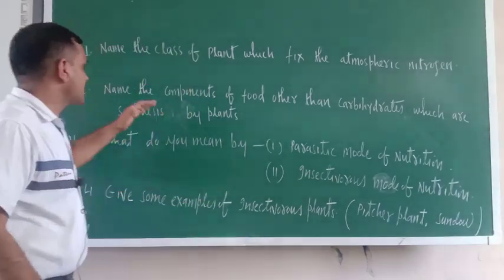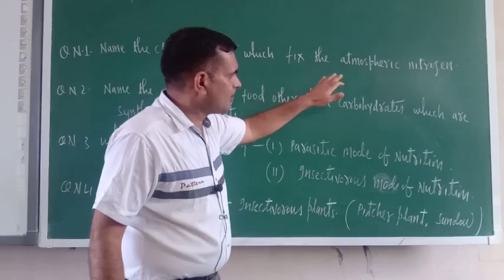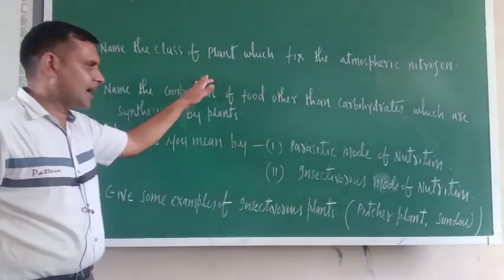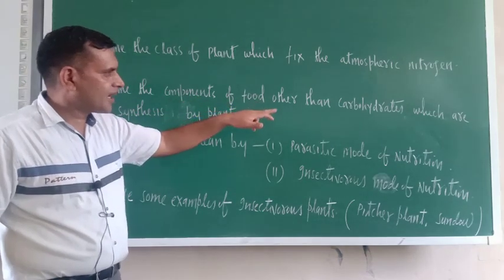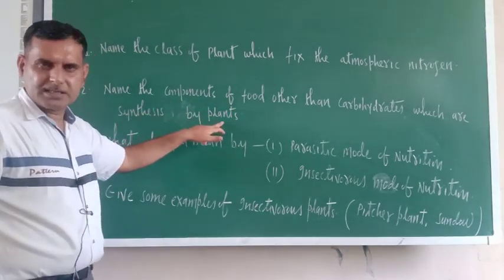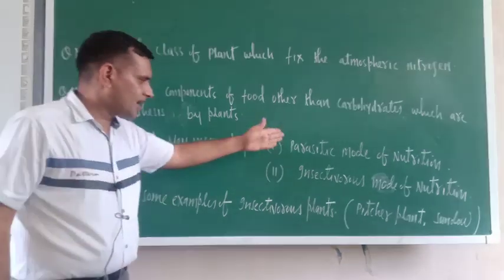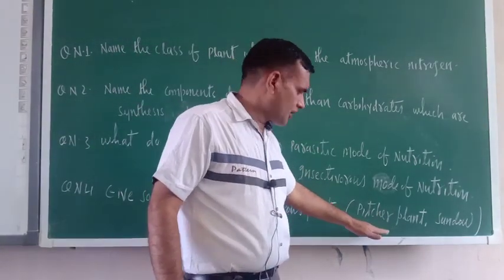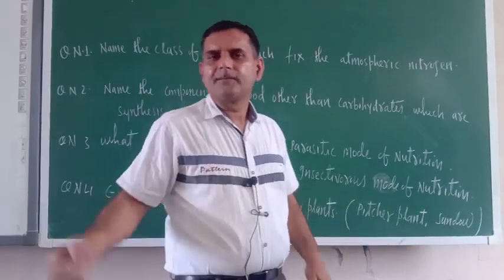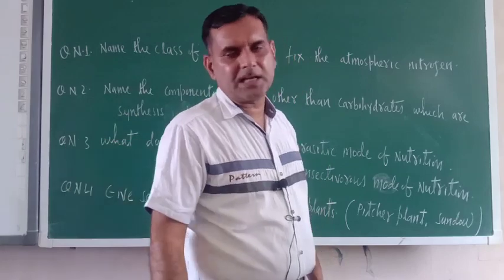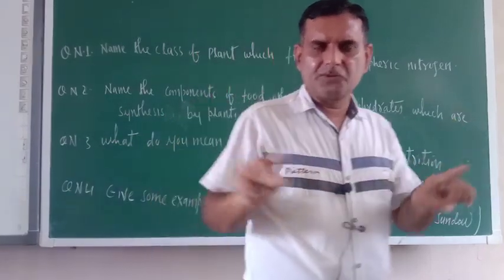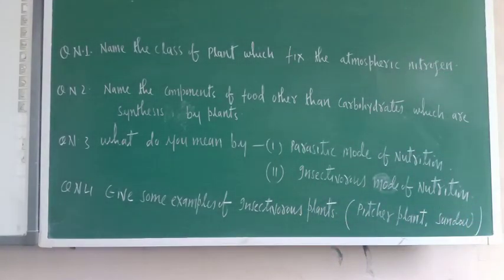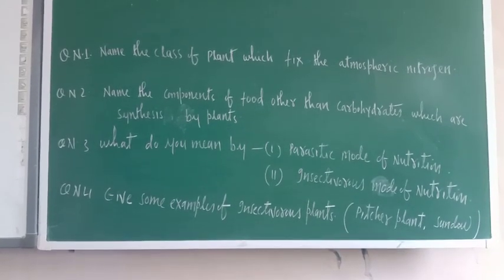Some questions for you: Name the class of plants which fix atmospheric nitrogen — answer: leguminous plants. Name the components of food other than carbohydrates synthesized by plants — answer: fats and proteins. Give examples of insectivorous plants — pitcher plant, sundew, and others from the video. At least two examples should be given. In this way, today's video is complete. Please keep writing and complete your homework daily. I will complete this unit and all units in the same manner. Thank you.